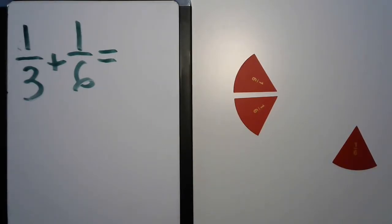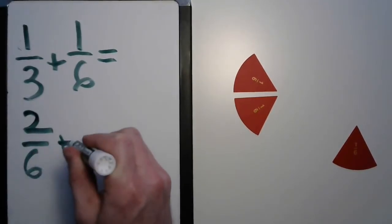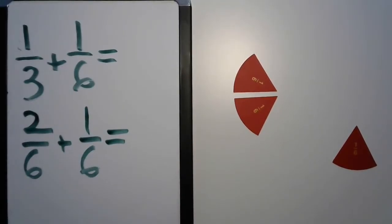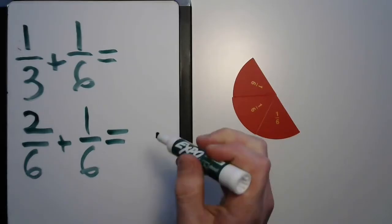Let's write down what our problem looks like now. It looks quite a deal more agreeable. Two-sixths plus one-sixth. And it makes it much easier. We can put them all together and three-sixths.